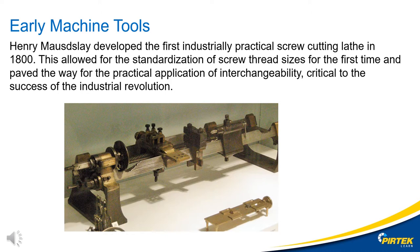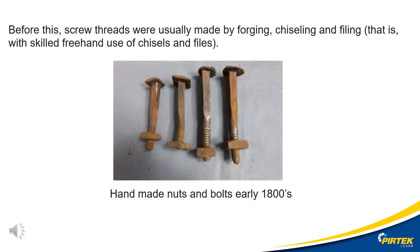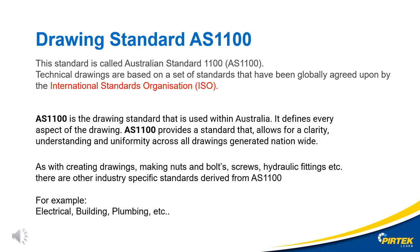Proposed standardization around the Industrial Revolution saw the birth of machine tools. Here we have pictured a screw cutting machine, or a screw cutting lathe, for producing nuts and bolts. Here we have a picture of some pre-Industrial Revolution nuts and bolts. Imagine having to forge, file and chisel every single nut and bolt by hand. Without standardization and automation, the Industrial Revolution and industrialization would not have been possible.